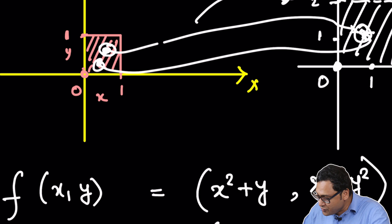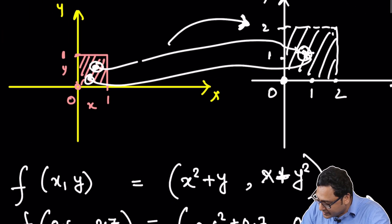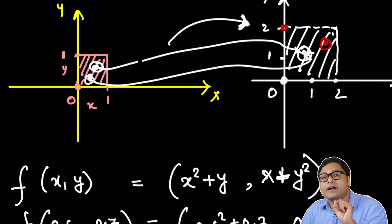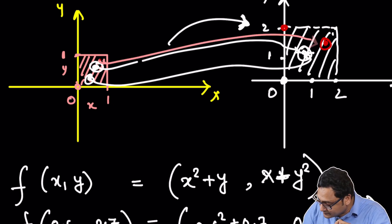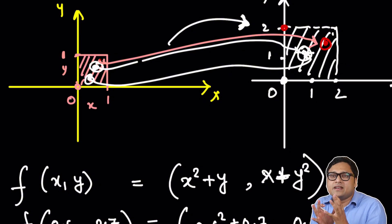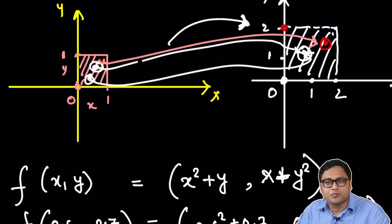What is onto? Can you find a point in the co-domain, maybe here or here? Can you find a point in the co-domain to which no arrow is coming? That is, no input coordinate would produce that output point. If that happens, the function is not onto.